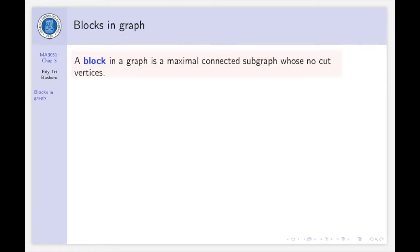Let's start with the definition. A block in a graph is a maximal connected subgraph whose no cut vertices. So here we have three key words: one is maximal, must be maximal, and then connected, and has no cut vertices.